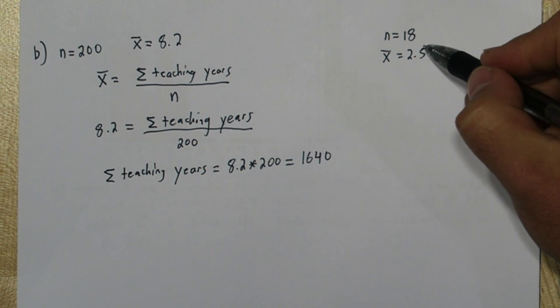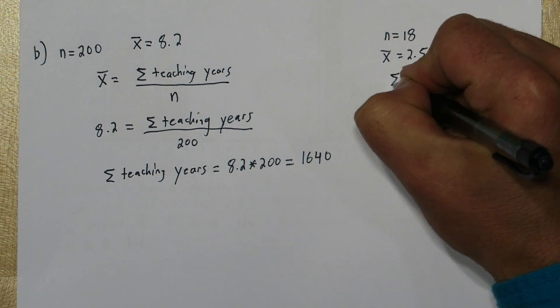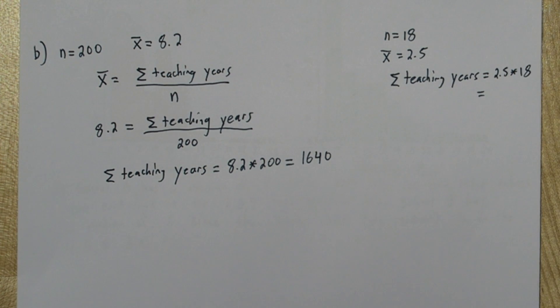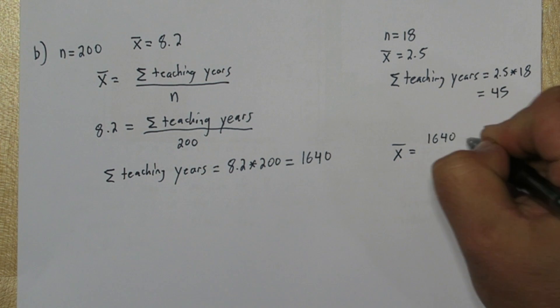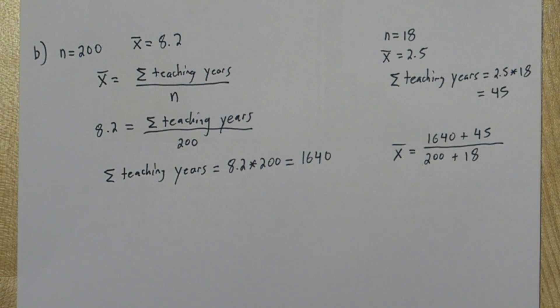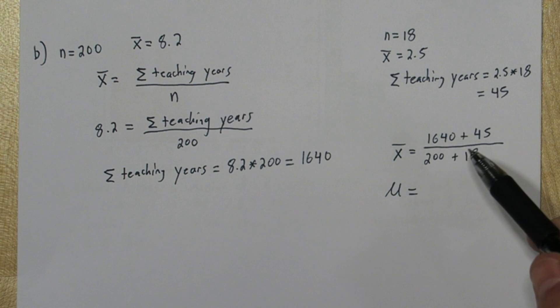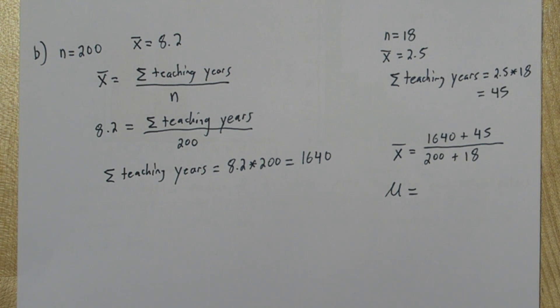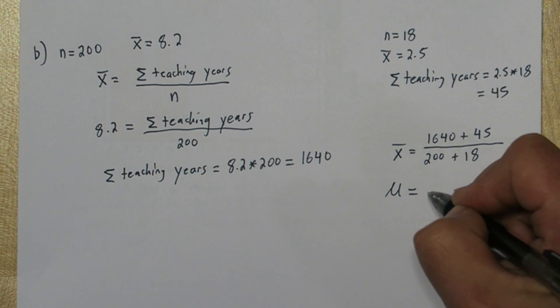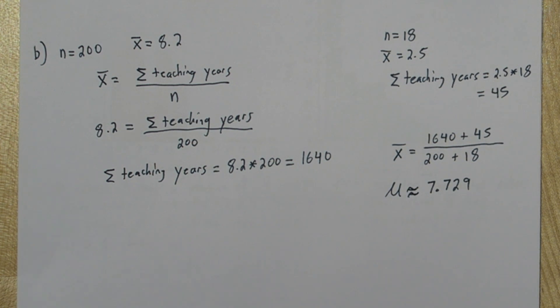Let's do the same thing for this sample of 18. Their mean was 2.5, so the sum of their teaching years is going to be 2.5 times 18, which is 45. Now if we combine these two sums and we combine their sample sizes, we can calculate the new mean. Now if this new mean actually represents the true mean, because everyone's data is included, we might actually be able to use mu here instead of x bar. It's not a sample anymore. It's actually the entire population. So when you add these up and then divide, you end up with an overall mean of about 7.729.